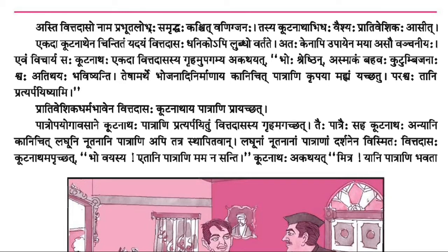Asti vith daso nama prabhut lobha samruddha kastit vanik janaha. There was one merchant named Vithdas, who was very rich but greedy. Tasya kutnaath abhidha vaishya prati vesika asit. A vaishya named Kutnaath was his neighbor. Abhidha means name, prati vesika means neighbor.